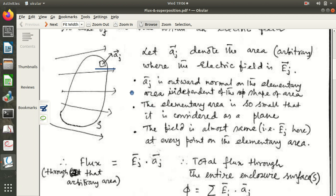So, A, J, just know this, A, J is outward normal on the elementary area and it does not depend on the shape of the area. As I told you, triangular, rectangular, whatever. And this elementary area is so small, we consider it very small, that it is considered as a plane.